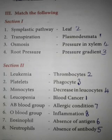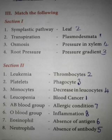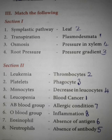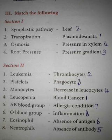Match the following answers: apoplastic pathway — plasma; transpiration — leaf; osmosis — pressure gradient; root pressure — pressure in xylem; leukemia — blood cancer; platelets — thrombocytes; monocytes — phagocyte; leukopenia — decrease in leukocytes; AB blood group — absence of antibody; O blood group — absence of antigen; eosinophils — allergic condition; neutrophils — inflammation.